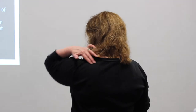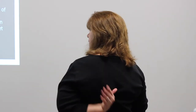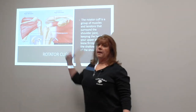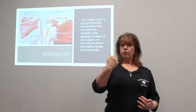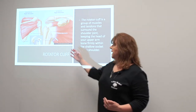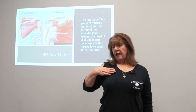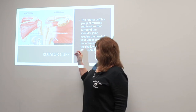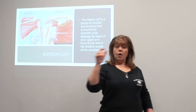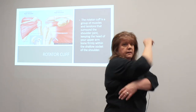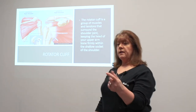The rotator cuff is made up of four muscles. You have your supraspinatus, which runs right along here; your infraspinatus, which is on the back side of the shoulder blade; the subscapularis, which is on the inner side of the shoulder blade; and the teres muscles on the outside of your axilla. Those are the muscles of the rotator cuff.